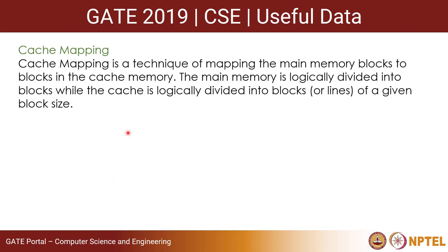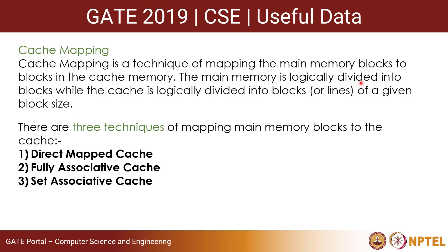Cache mapping is a technique of mapping main memory blocks to the blocks in the cache memory. The main memory is logically divided into blocks, while the cache is logically divided into blocks or lines of a given block size. There are three techniques of mapping: direct mapped cache, fully associative cache, and set associative cache.